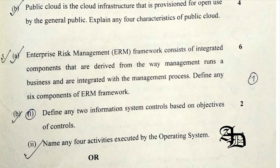Question 5A was related to defining any 6 components of the ERM framework. These can be: information and communication, objective setting, event identification, risk assessment, risk response, and control activities.